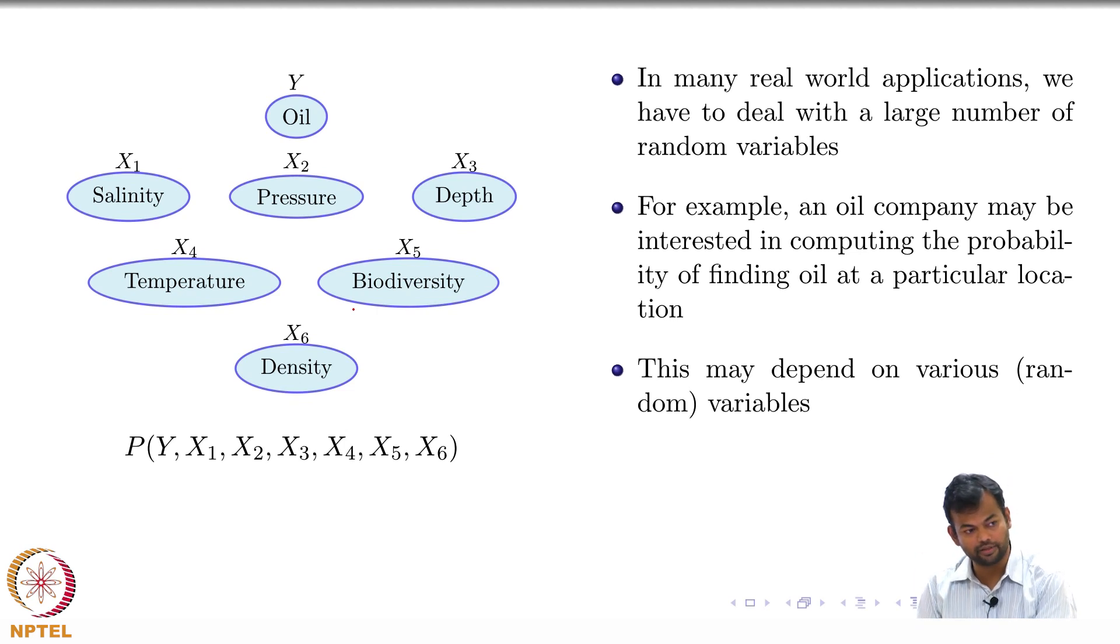Why do I call these as random variables? Because their values vary from location to location. What's our universal set here? All the locations that we are interested in and these random variables are mapping these locations to certain values. At one location the depth would be certain something, at the other location the depth would be something different. This set can be mapped to multiple things. There could be multiple random variables: depth, pressure, biodiversity, density and so on.